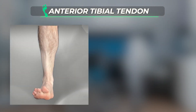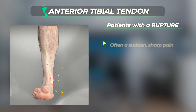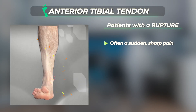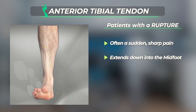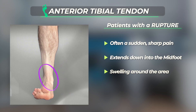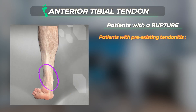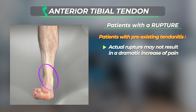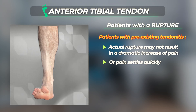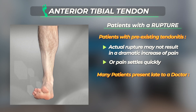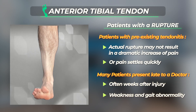Patients suffering a rupture of the anterior tibial tendon will often notice a sudden sharp pain in the front of the ankle which extends down into the mid part of the foot. There may also be swelling in this area. However, in some patients with a painful pre-existing tendonitis, the actual rupture may not result in a dramatic increase in pain, or the pain may settle quickly. For this reason, many patients often present to a physician weeks after the actual injury, with their primary complaint being weakness and an abnormality in their gait.